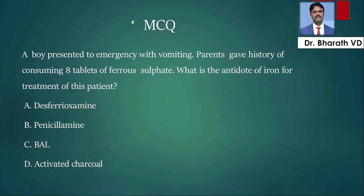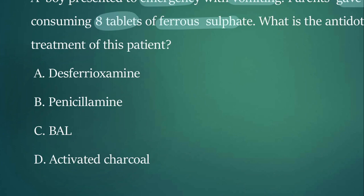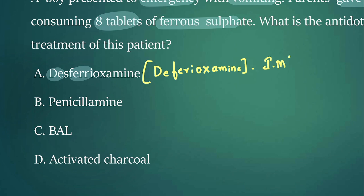Let us move on to the second MCQ. A boy presented to the emergency with vomiting. Parents gave history of consuming 8 tablets of ferrous sulfate. So what is this? It's a case of iron overdose or iron poisoning. They're asking what is the antidote for treatment of this patient. It's easy to identify - the name is desferioxamine, also called deferoxamine or deferrioxamine.